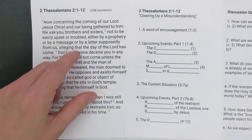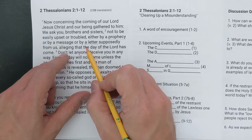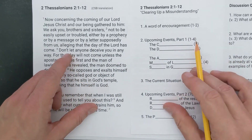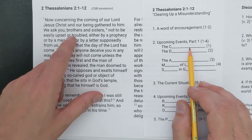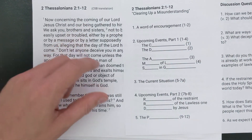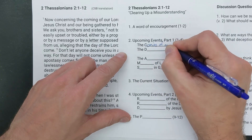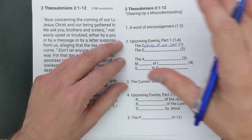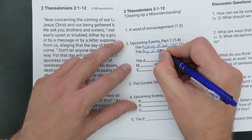As Paul finishes this word of encouragement not to be upset by illegitimate messages, he begins to describe some upcoming events. In verses one and two he's covered what we would call the coming of our Lord and the day of the Lord. In verse three: 'Don't let anyone deceive you, for that day will not come unless the apostasy comes first.' The apostasy — from the Greek word apostasia — means departure or complete abandonment of the truth of God's plan. This is the apostasy, which will become significant. The day of the Lord won't come unless the apostasy comes first and the man of lawlessness is revealed.